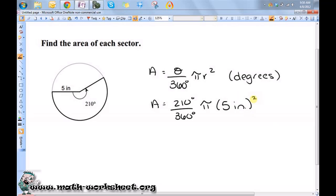So this cancels to 21 over 36, which is 7 over 12 pi times 25 inches.